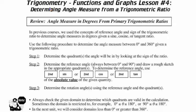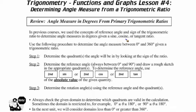We are talking about trigonometry functions in graphs, lesson number four: determining angle measure from a trigonometric ratio. In previous math courses, we used the concept of reference angle and the sign of a trig ratio to determine angle measures in degrees given the value of the sine, cos, or tan ratio.